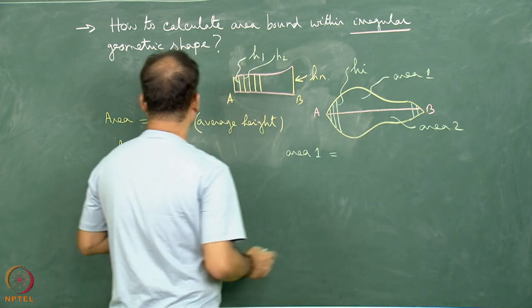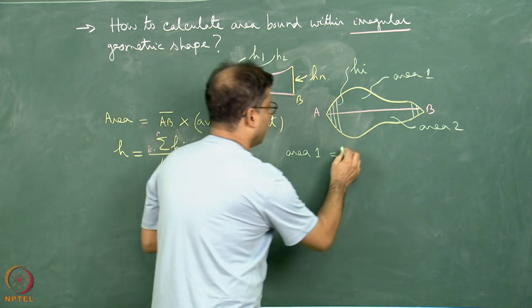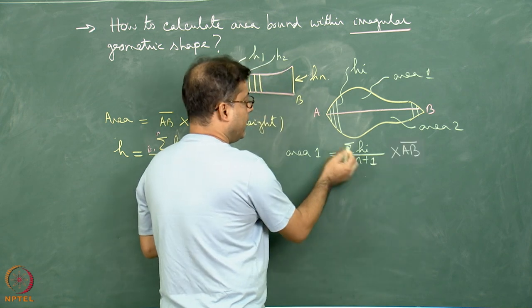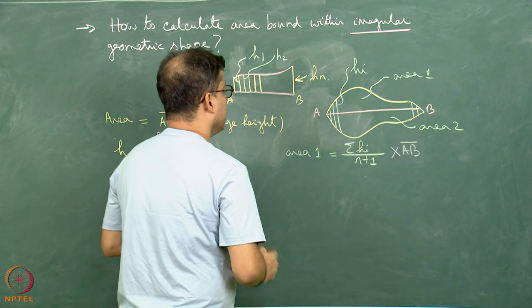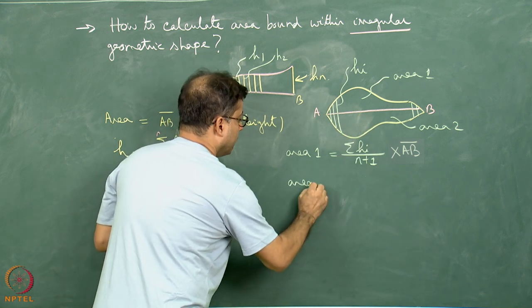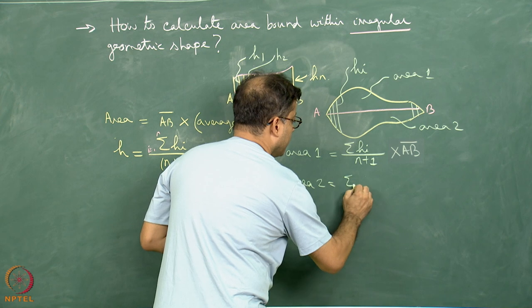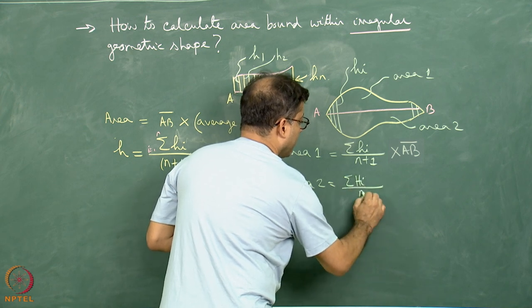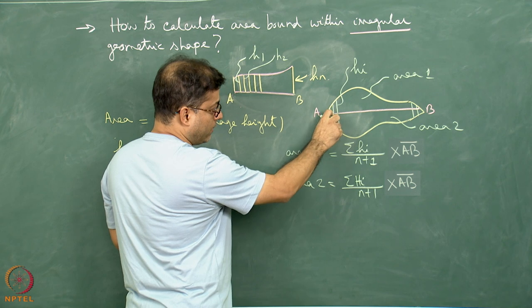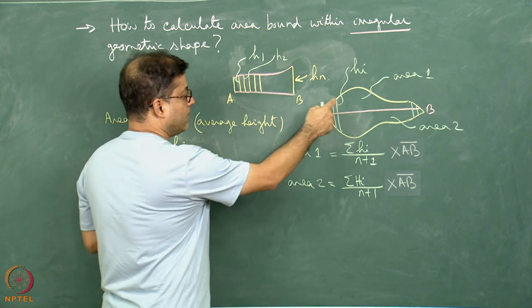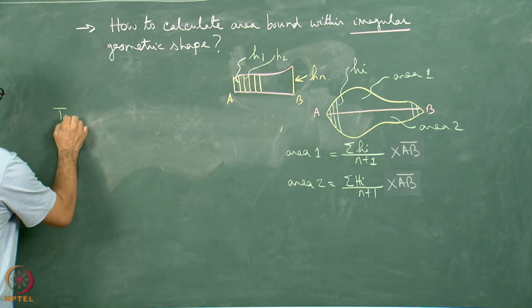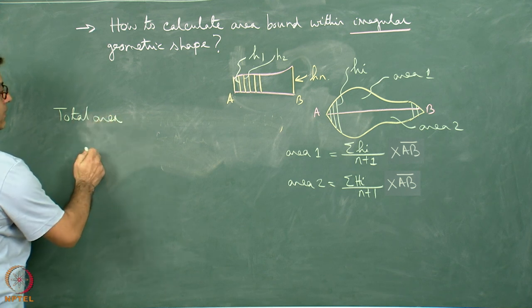Area 1 is equal to, we apply this formula: AB × (Σh_i)/(n+1), where i runs from 1 up to n. Similarly, I can take these lengths. I can keep on measuring and add up and I can find area 2 is equal to AB × (ΣH_i)/(n+1). What is capital H? These are all these distances from AB in the downward direction.